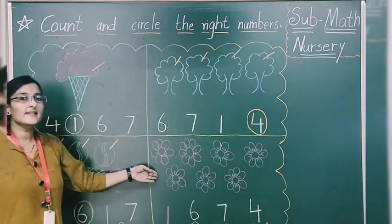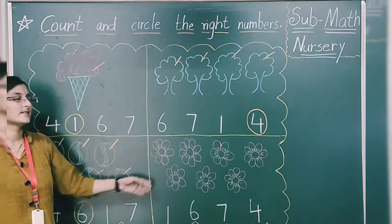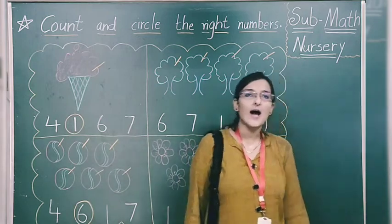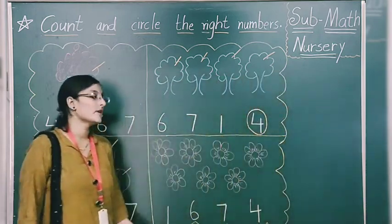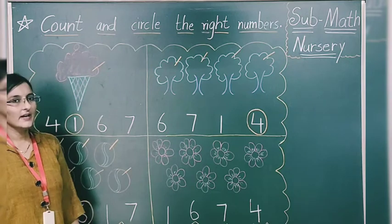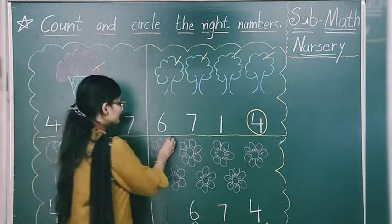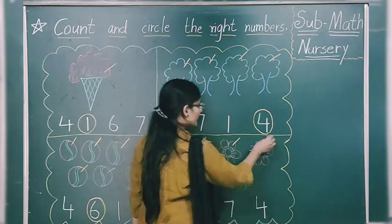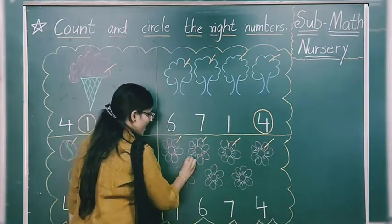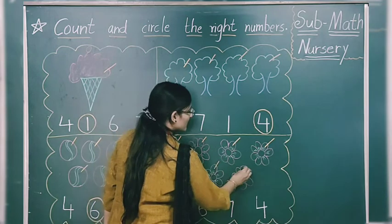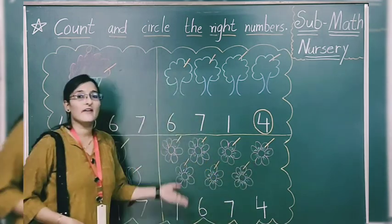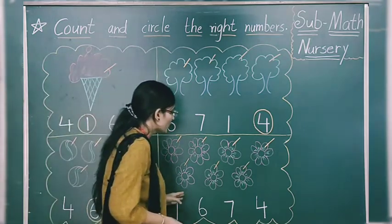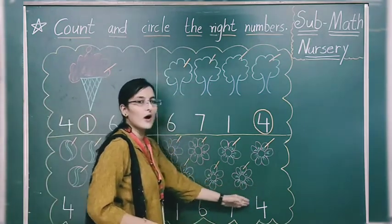Moving to last. What is this? Flower. How many flowers are there? We have to count. Start counting with me: 1, 2, 3, 4, 5, 6, 7. How many flowers are there? 7. We have counted. Now we have to recognize the number 7 from this side.